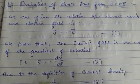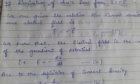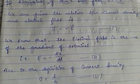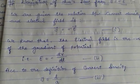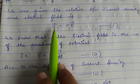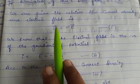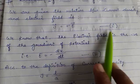...that J is current density, sigma is conductivity, and E stands for electric field. So we are given the relation between current density and electric field: J equals sigma into E, given as equation number one.